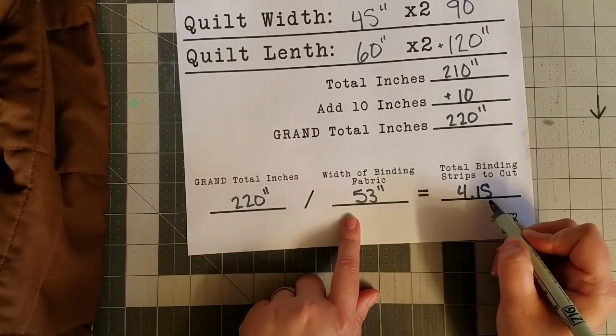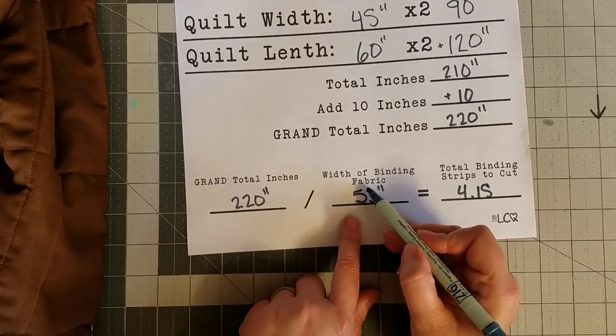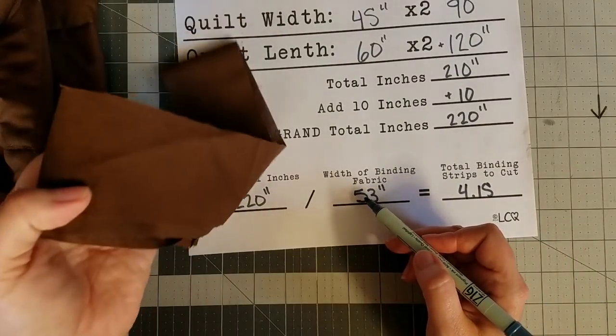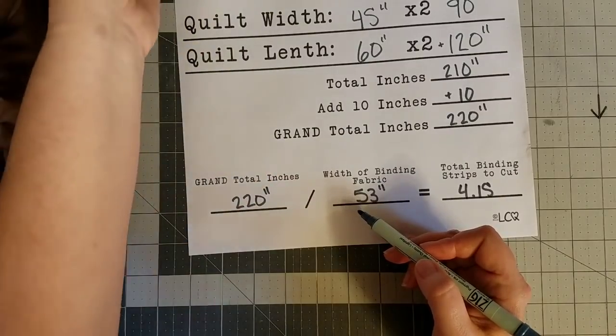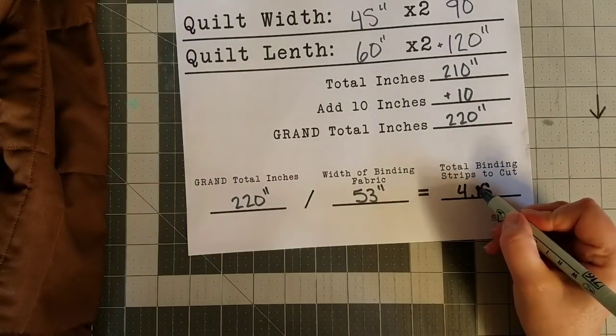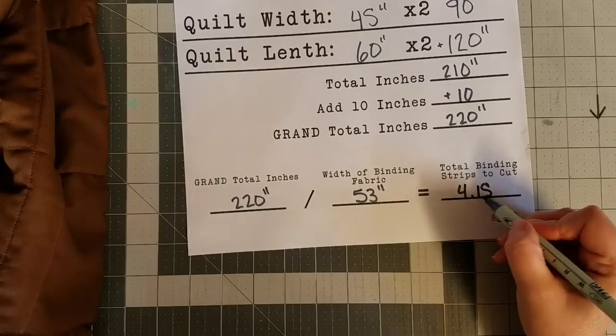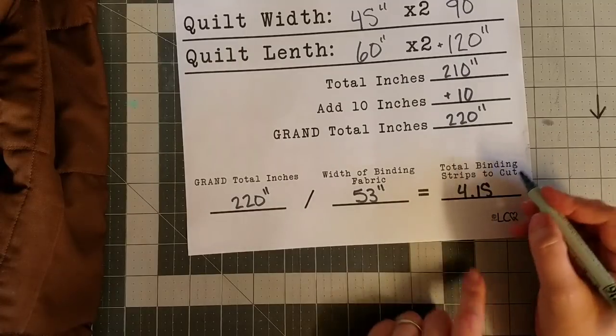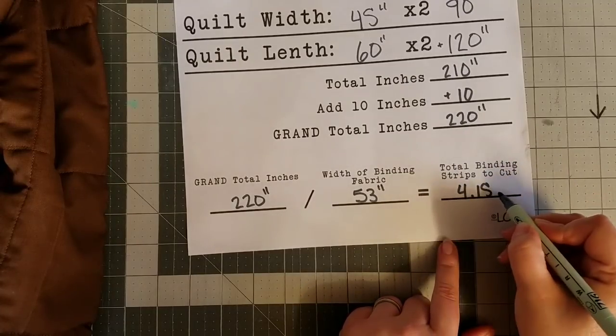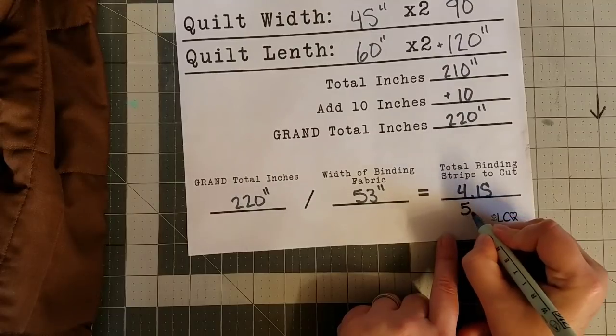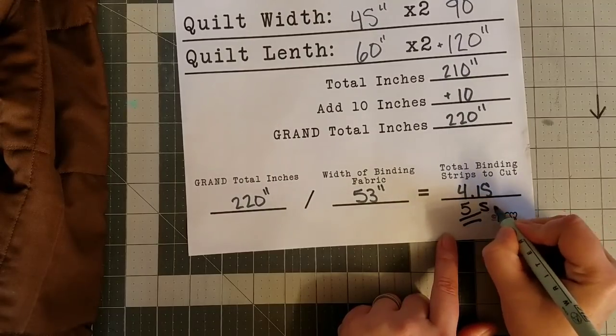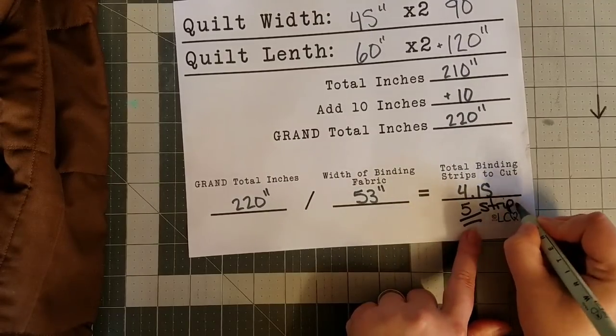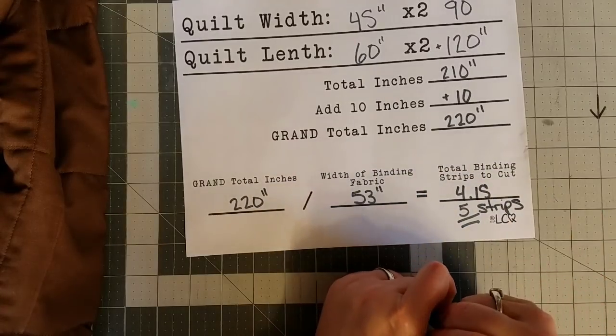4.15. That is the total number of strips of binding fabric that I need to assemble to make the binding for my quilt. Now anytime that I have a number that's not a whole number, I usually like to round up. So in this case, 4.15, I would round up to five strips of binding, and that's going to give you a little bit extra.